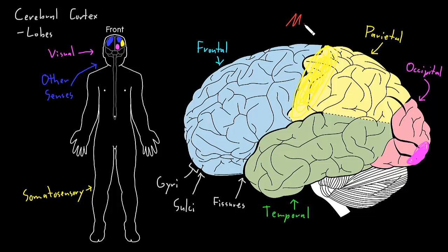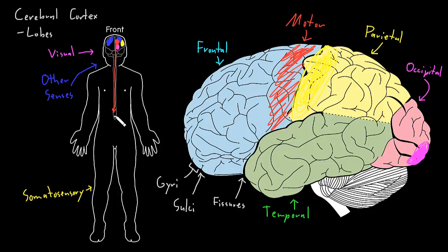Similarly, motor information — the control of skeletal muscles — involves areas of cerebral cortex that control muscles on the other side of the body. So areas on the left side of the cerebrum send signals via upper motor neurons down to lower motor neurons on the other side of the spinal cord, affecting movement of the opposite side. For instance, the muscles of the right leg are primarily controlled by cerebral cortex on the left side of the cerebrum.